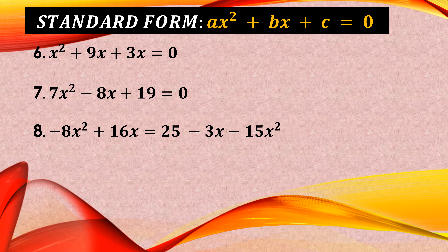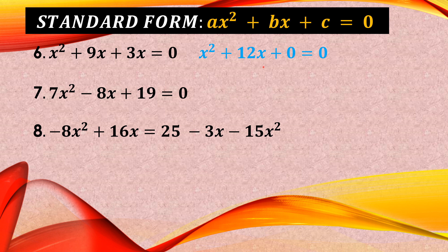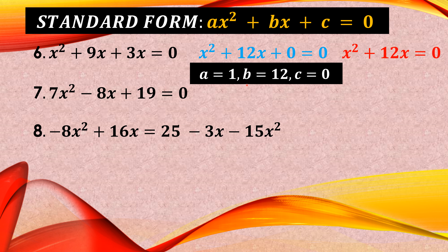Number 6: We have X squared plus 9X plus 3X equals 0. The similar terms 9X and 3X combine to give 12X. There is no constant term, so C is 0. The final answer is X squared plus 12X equals 0, where A is 1, B is 12, and C is 0. Number 7 is already on its standard form, so we proceed to number 8.